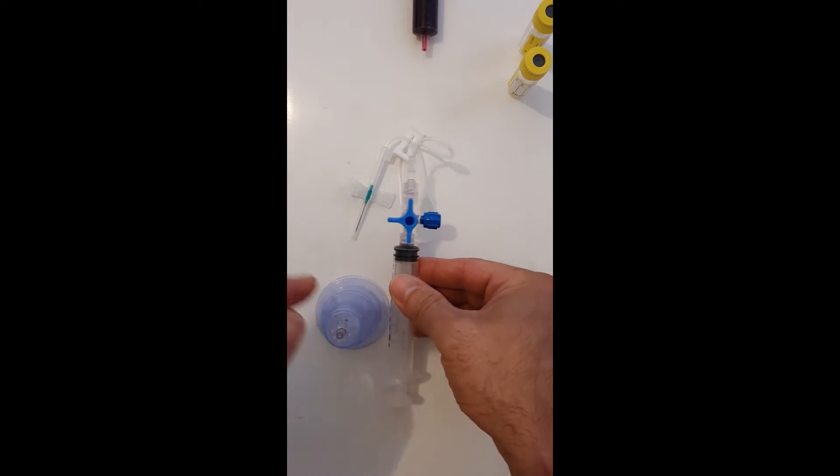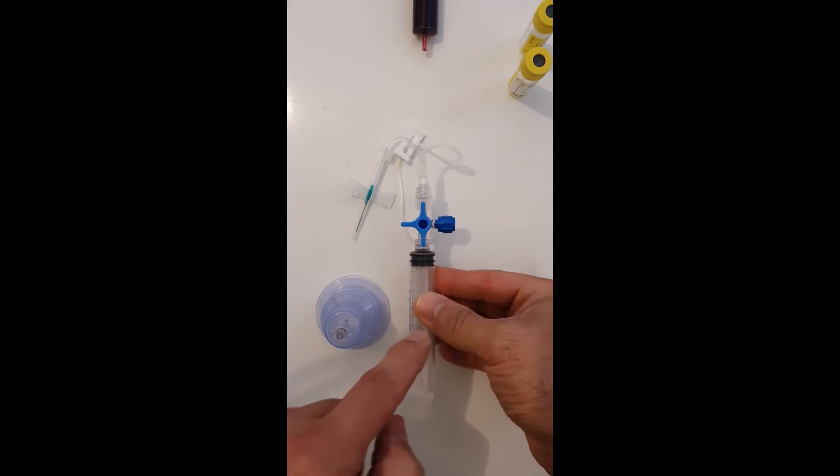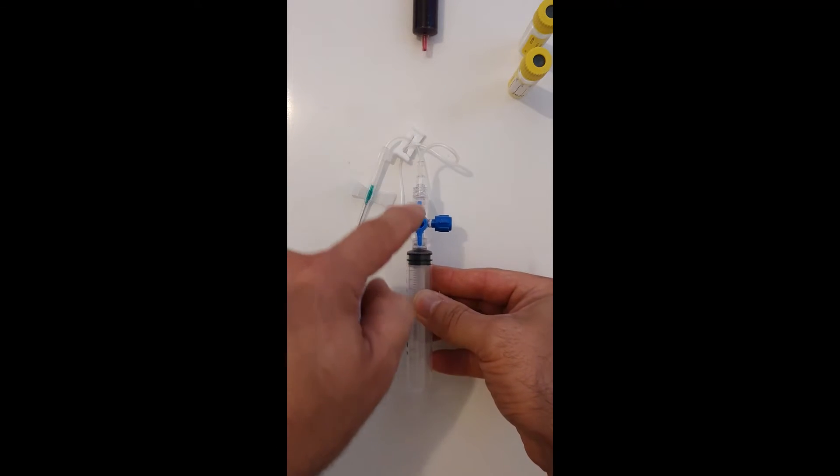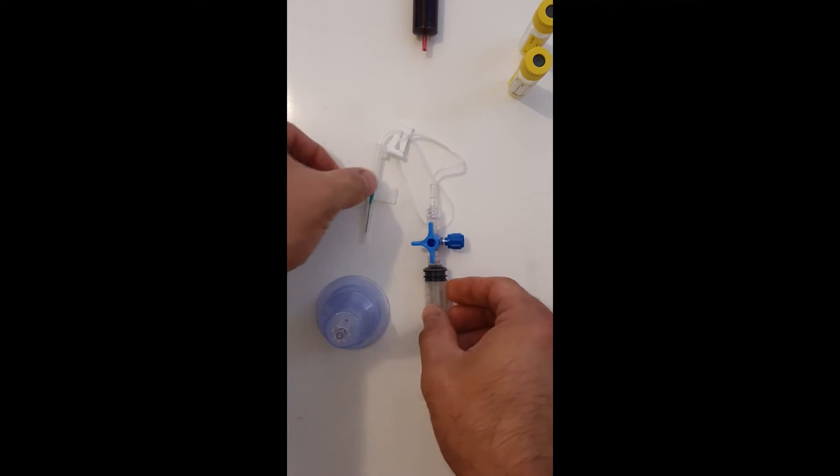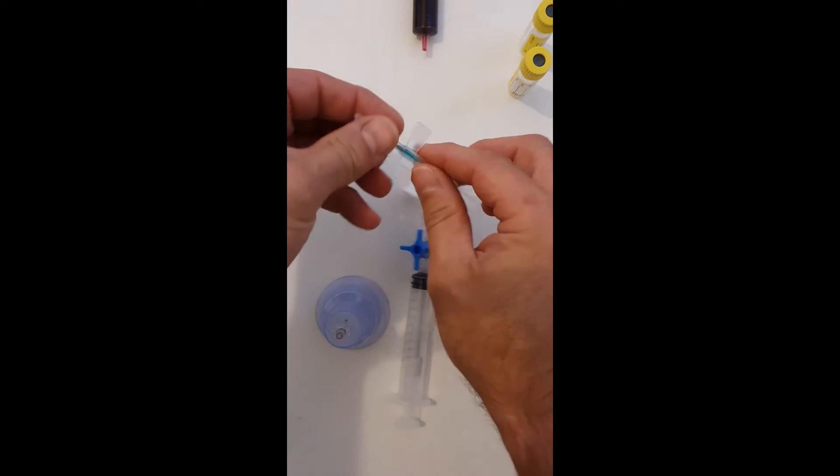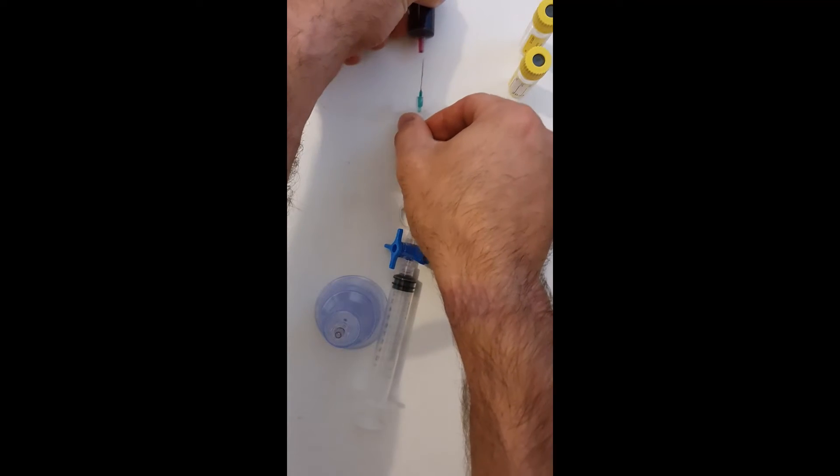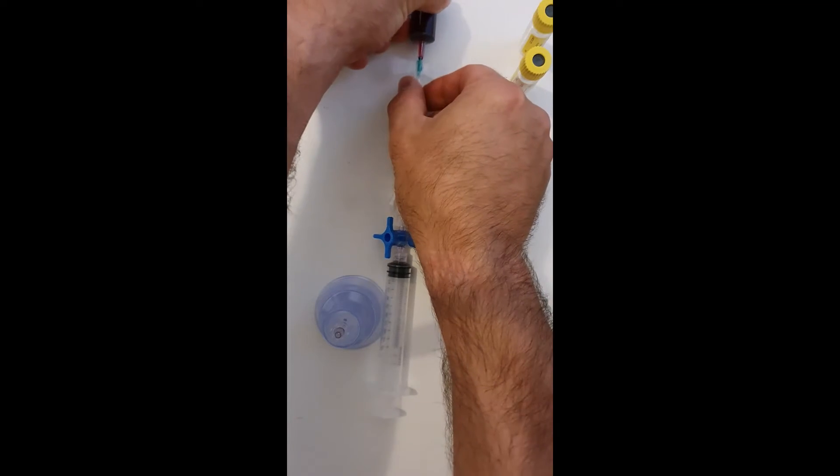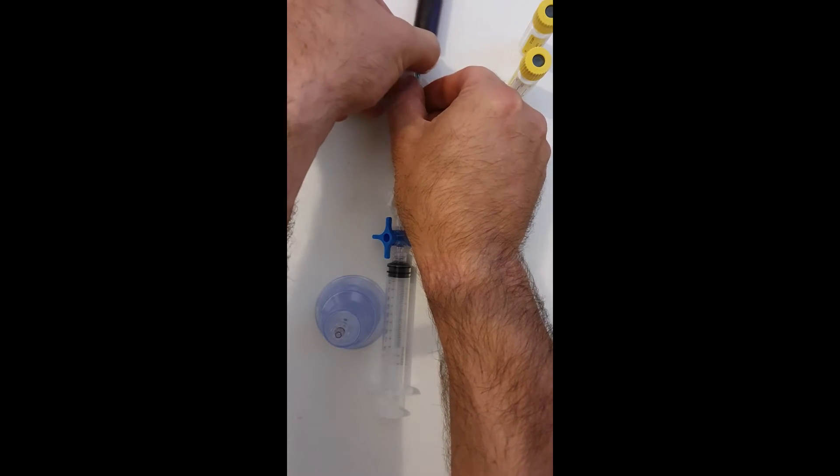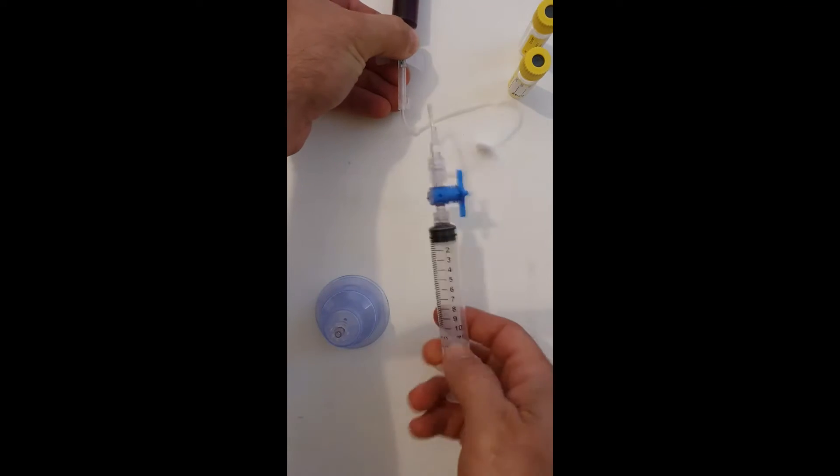So as you can see, in this configuration, the blood draw can come straight through the stopcock. All I'm going to do is remove the cap, place the needle in and draw off.